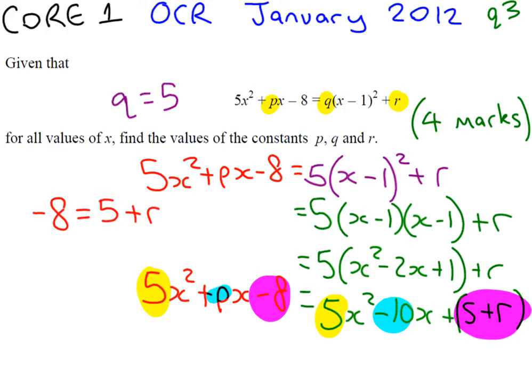So, to find r, we're going to be taking away 5, which gives us minus 13. So, our final answer: r equals minus 13, q equals 5, and p was minus 10.